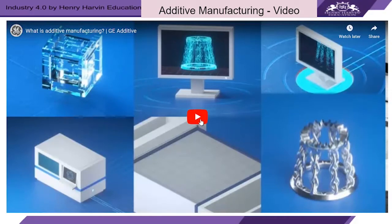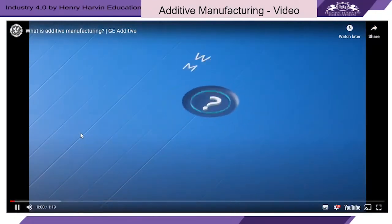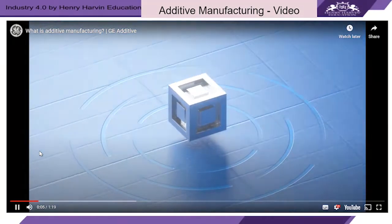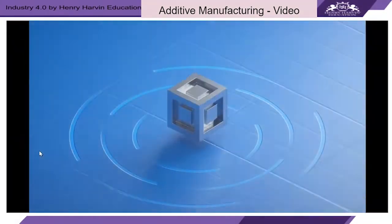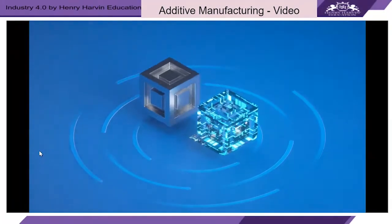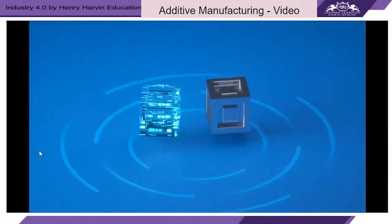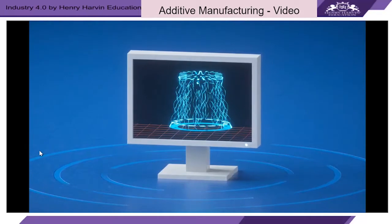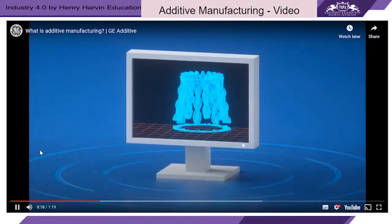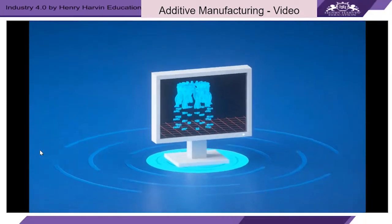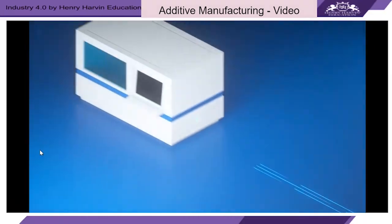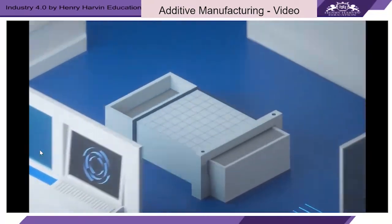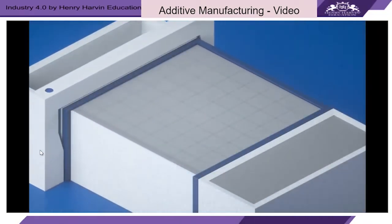Additive manufacturing, also known as 3D printing, is a process that creates a physical object from a digital design. An engineer designs the object using computer-aided design, or CAD, software. The 3D design file is then sliced into thin layers and uploaded to an additive manufacturing machine. The manufacturing process begins once an extremely thin layer of metal powder is spread across the platform.